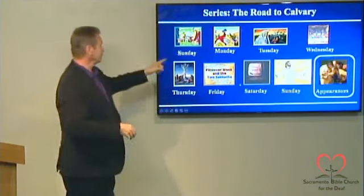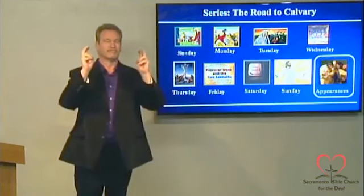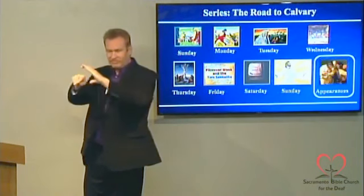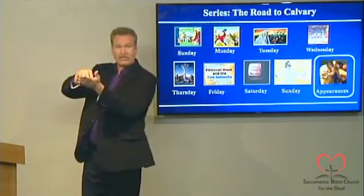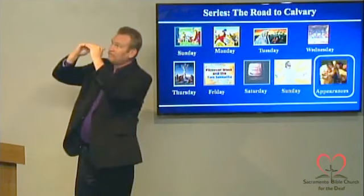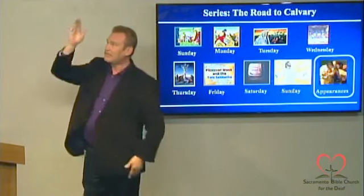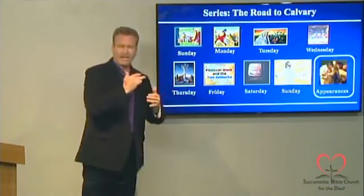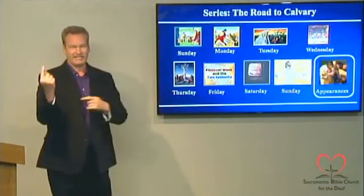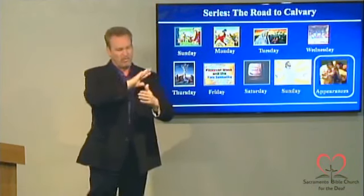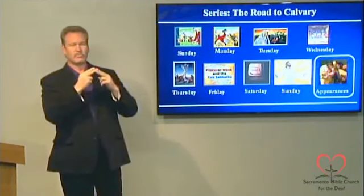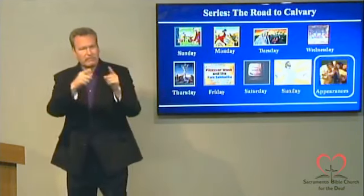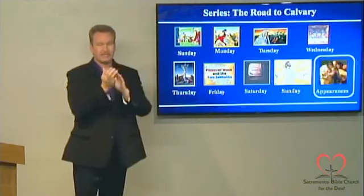So far we've discussed all of these things, beginning with the last week of Jesus' life and that road to Calvary — how Jesus was entombed for three days, how he rose from the dead, and how he is seated at the right hand of God. Our final message in this series, Road to Calvary, is about Jesus' appearances.